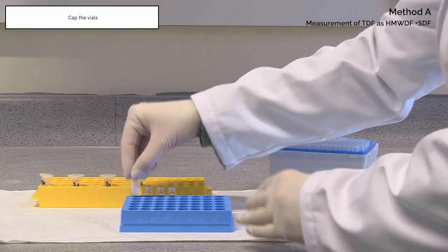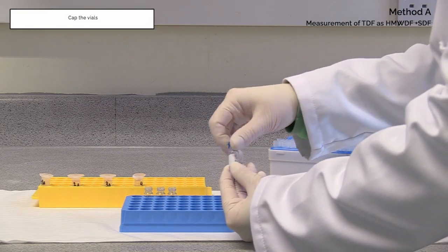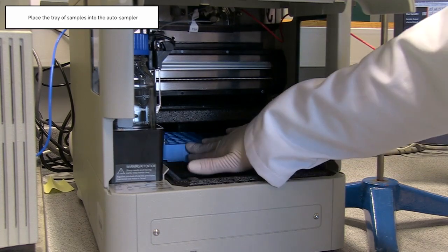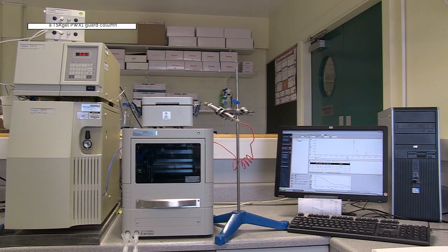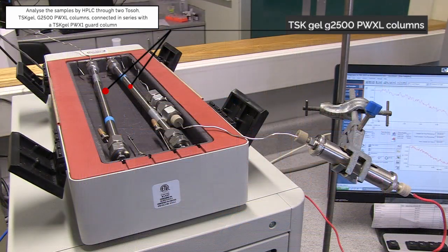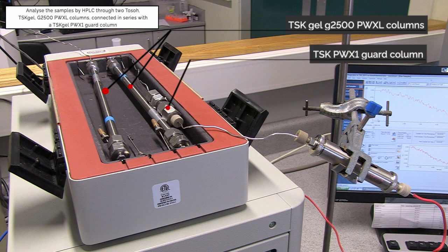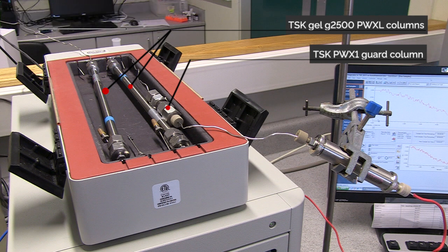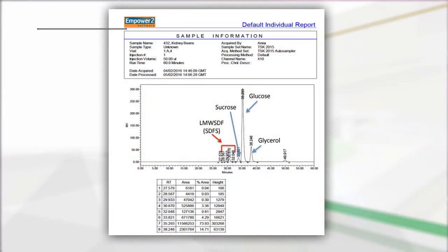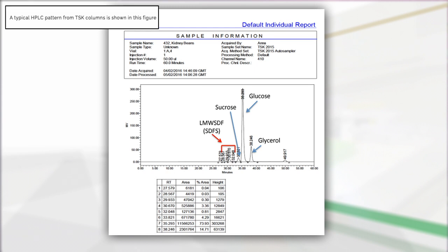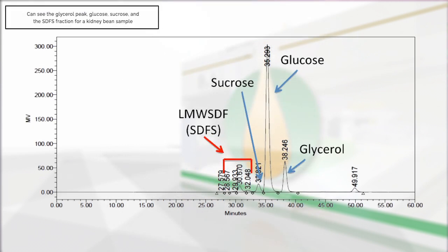Cap the vials and place the tray of samples into the autosampler. Analyse the samples by HPLC through two TOSOH TSK Gel G2500 PWXL columns connected in series with the TSK Gel PWX guard column. Remove remaining traces of salt using a Bio-Rad in-line deionization column containing cation and anion exchange resin. A typical HPLC pattern from TSK columns shows the glycerol peak, glucose, sucrose and the SDFS fraction; the sample analysed here was kidney beans.